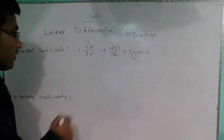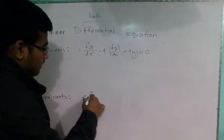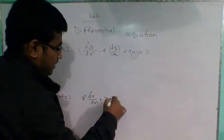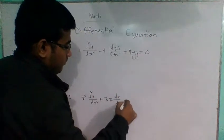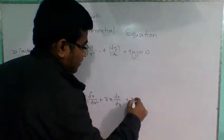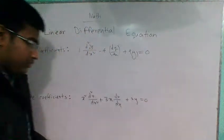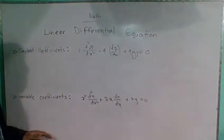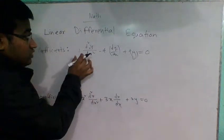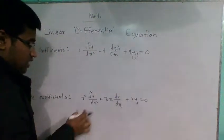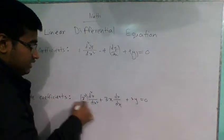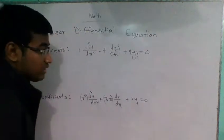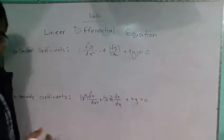We have constant coefficients. For example, x squared d squared y by dx squared plus 3x dy by dx plus 3y equal 0. Here the coefficients are not constant — they are variable. So this is the difference between constant coefficient and variable coefficient.